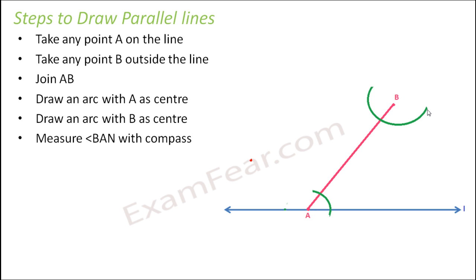Now you measure angle BAN with the compass. So BAN would be this angle. Let's assume that there is some point N here. So this angle would be BAN. So how do you measure it with the compass? Something like this. So once you measure this angle...